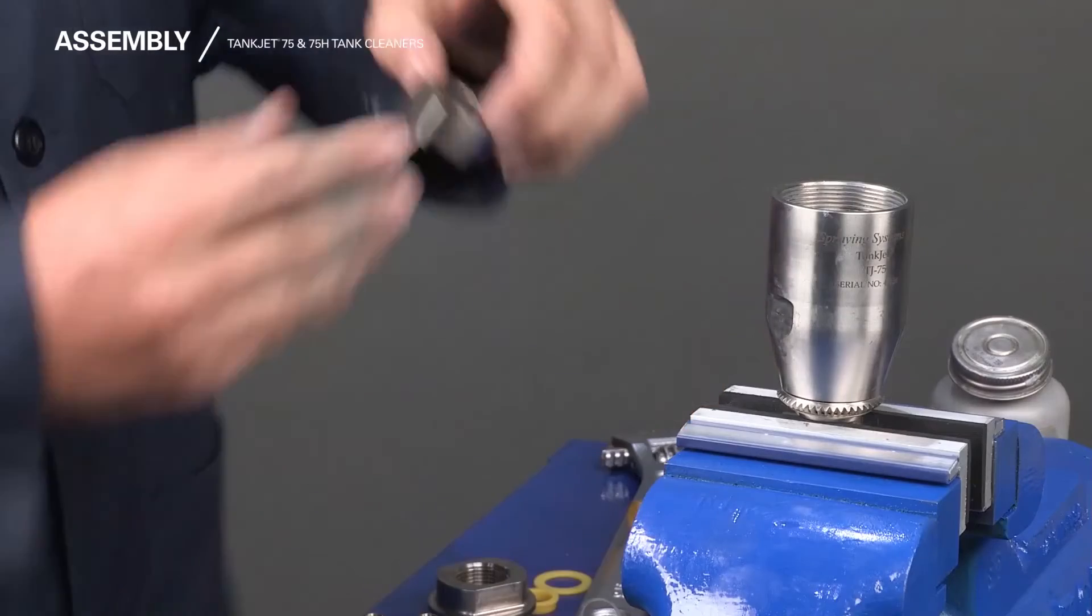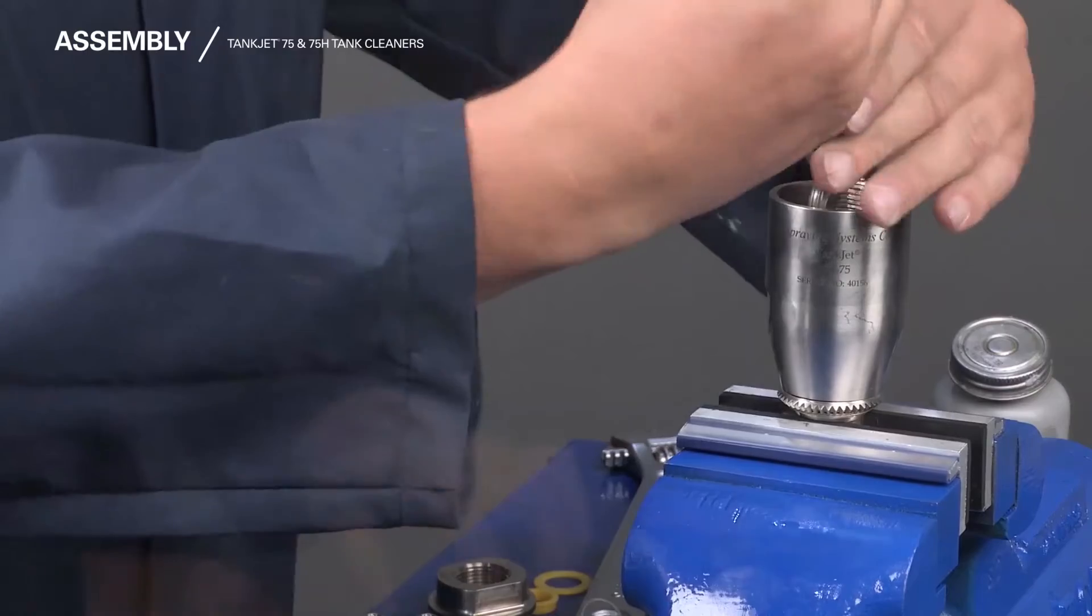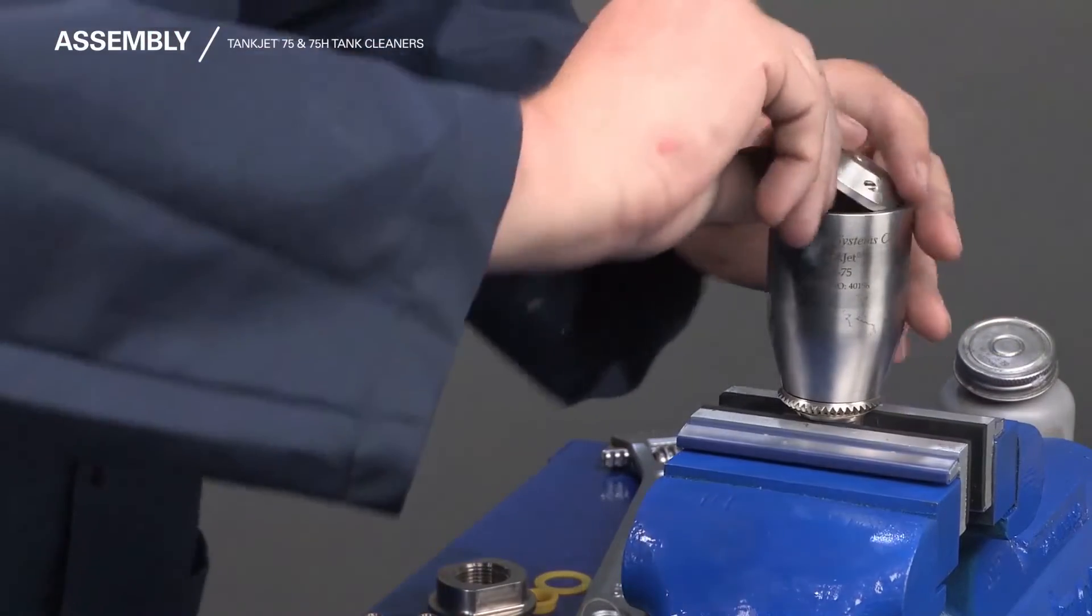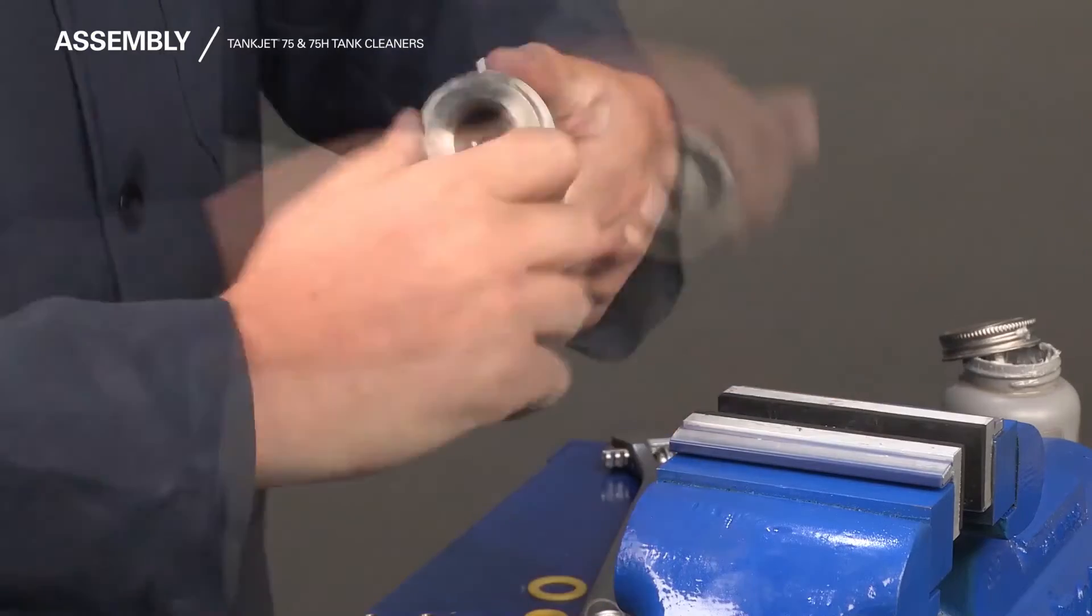Insert the rotor and then tighten using the needle-nose pliers. Then, insert the water motor. Apply anti-seize to the inlet cap and tighten.